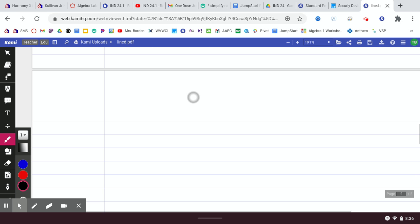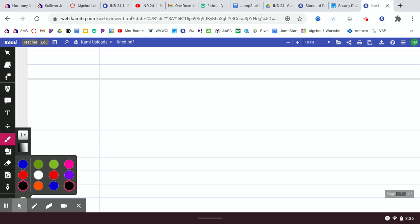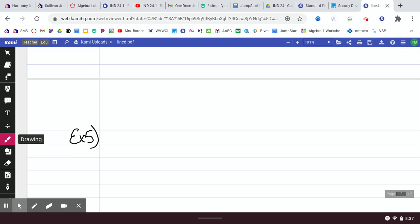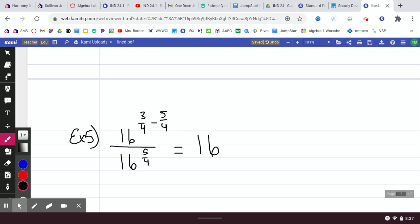This will be example number 5. We have 16 to three-fourths over 16 to 5-fourths. So, your base and your base are both 16. So your base is going to stay 16. And I think division ones are really easy to do because you can just take that 5-fourths and you can just write it up there. You can put minus 5-fourths right here. And it's really easy to see. You're going to get negative 2 over 4. Because 3-fourths minus 5-fourths, your bigger number was on the bottom.